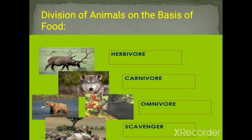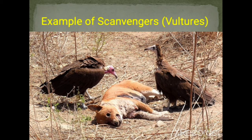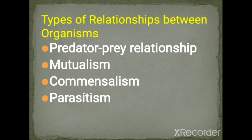Carnivores are animals that feed on other animals — tigers, leopards, lions, and eagles are examples. Omnivores are animals that feed on both plants and animals, like pigs, birds, raccoons, and humans, who eat vegetables as well as meat. Scavengers are animals that feed on dead organic matter — vultures are a prime example, taking their food from dead organisms.